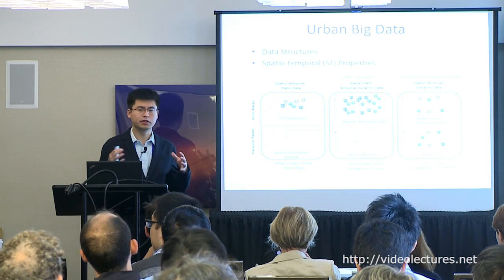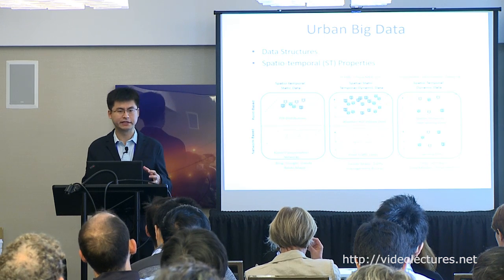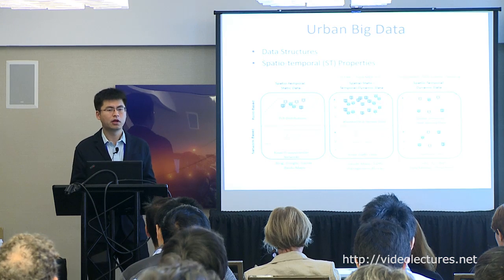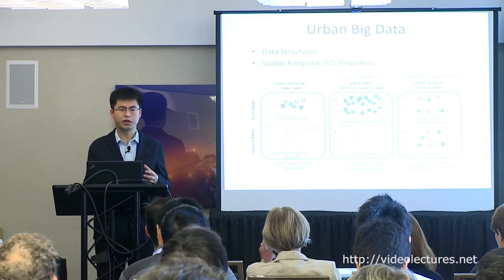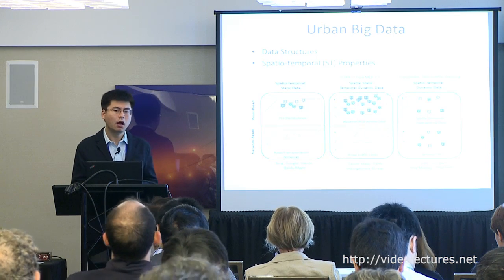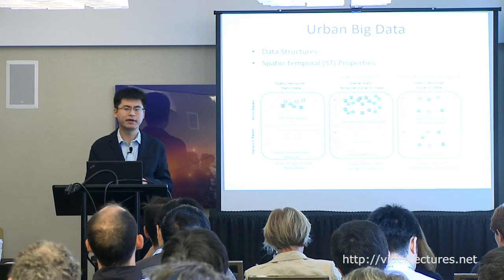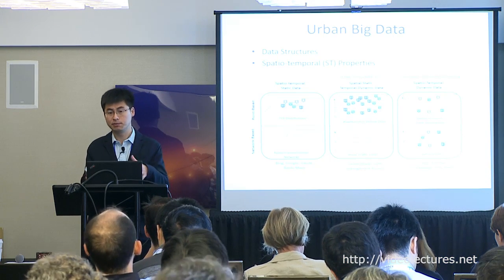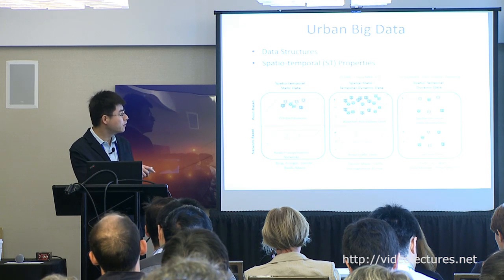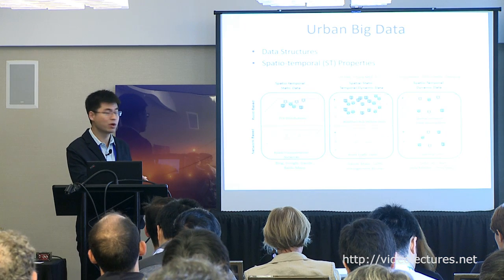In urban space we can collect a diversity of data — from social media to traffic data — all associated with spatial and temporal properties. In terms of structure, we can categorize urban big data into two groups: point-based data or network-based data.